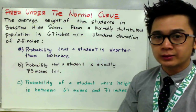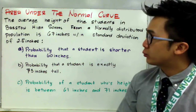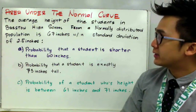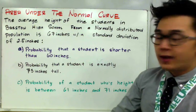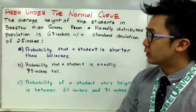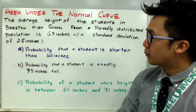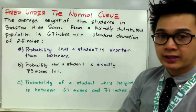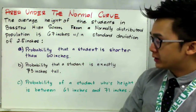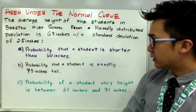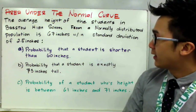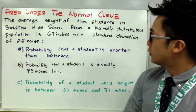Today we're going to answer some probability questions in a standard normal distribution. In this word problem, the average height of students in Barstow High School from a normally distributed population is 67 inches with a standard deviation of 2.5 inches. We're going to answer three questions from our given mean and standard deviation. The first problem is finding the probability that a student is shorter than 60 inches. Letter B, the probability that a student is exactly 73 inches tall. And for letter C, the probability of a student whose height is between 61 inches and 71 inches.